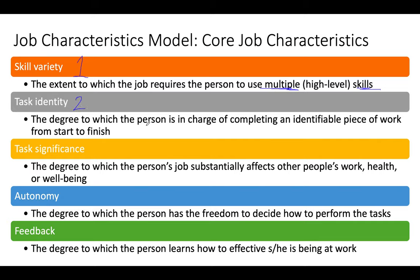The second is task identity — the degree to which the person is in charge of completing an identifiable piece of work from start to finish. Imagine working at a Ford factory where you used to build an entire car over a month. Then we move to an automated situation where everybody does just one task — you go from building the entire car to just hanging one wheel onto the car all day long. In the wheel situation, task identity is very, very low; in the build-the-whole-car situation, task identity is very high.